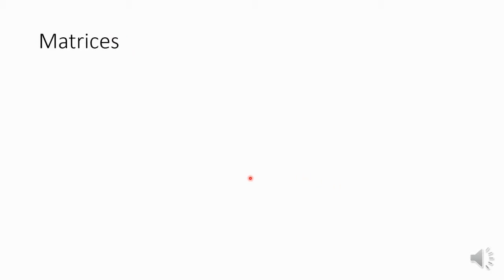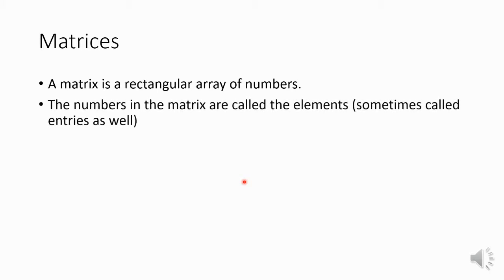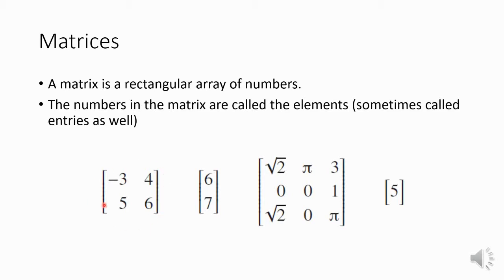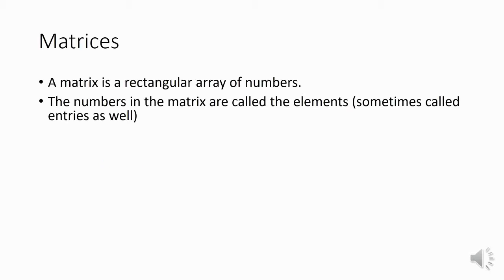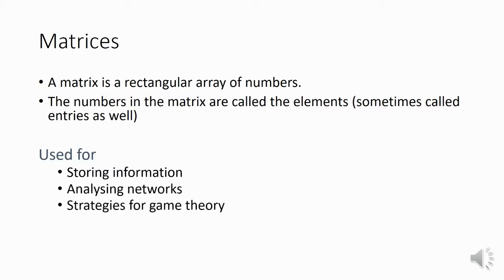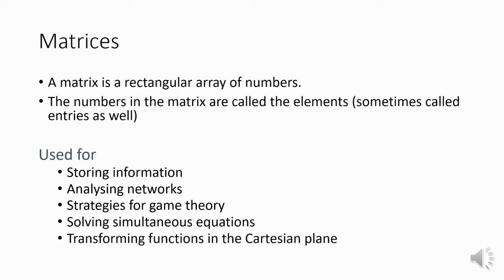The first question is: what is a matrix? If we simplify it down, it's just a rectangular array of numbers of any size, and all the numbers within a matrix are called elements of the matrix. Matrices are used for storing information and for working with large amounts of data by computers. They're used for analyzing networks and for game theory. We will also be using them for solving simultaneous equations and for transforming functions in the Cartesian plane.